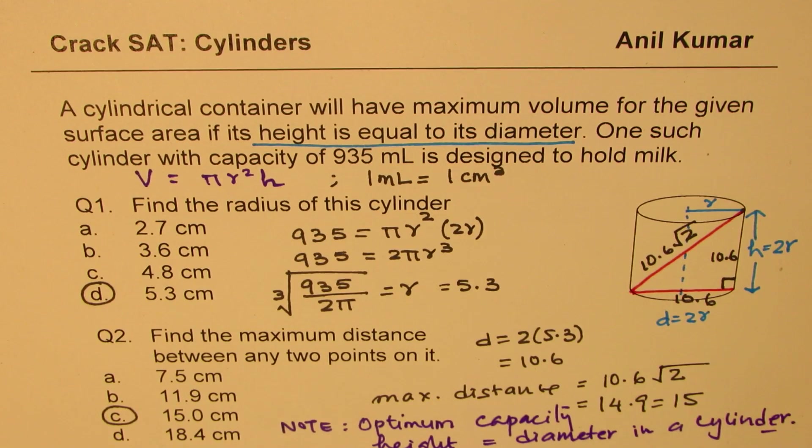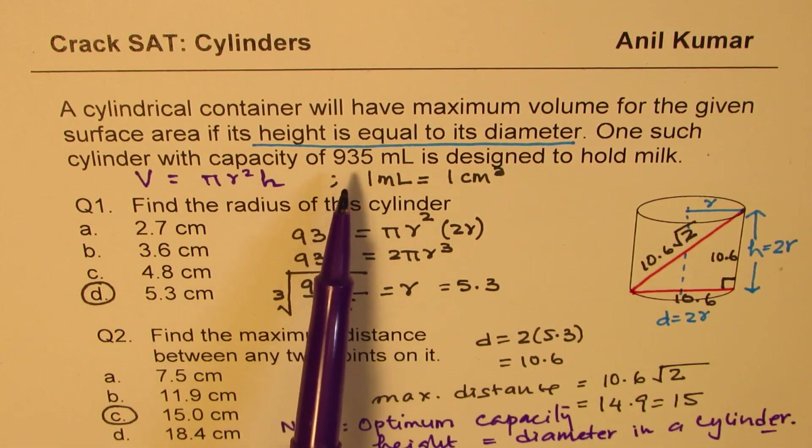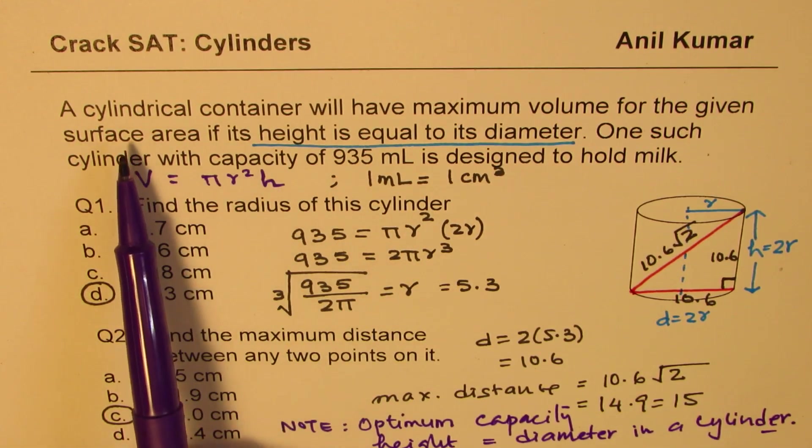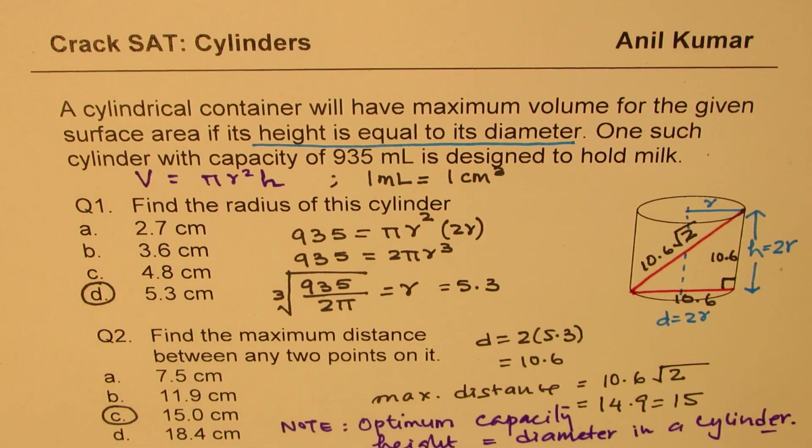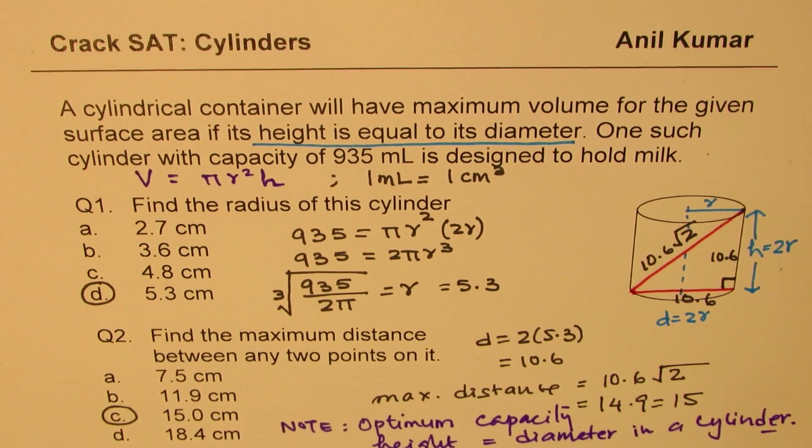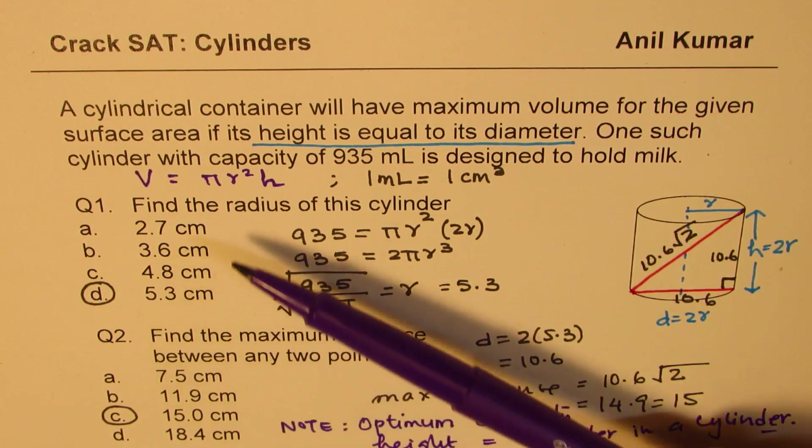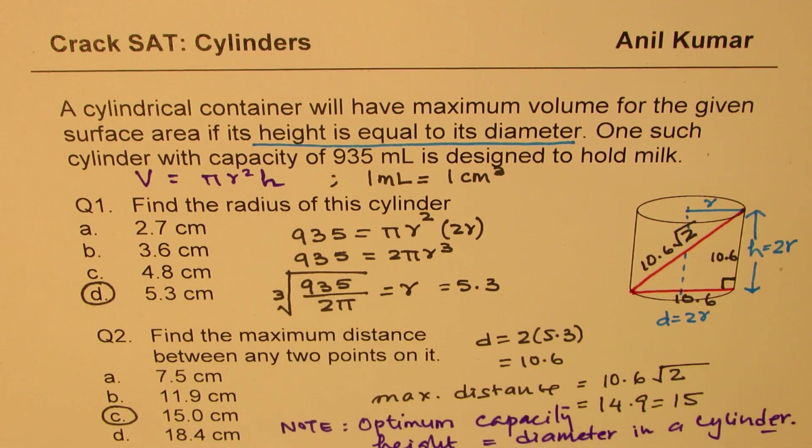Now, this question could have been changed. And instead of giving you the volume, I could have given you the surface area. So you could do a question with surface area in mind. So if I say, well, if the surface area is, let's say, 1000 centimeters squared, in that case, what is the same thing? What could be the radius and what could be the distance diagonally across? So this question could be changed in so many different ways to work with.